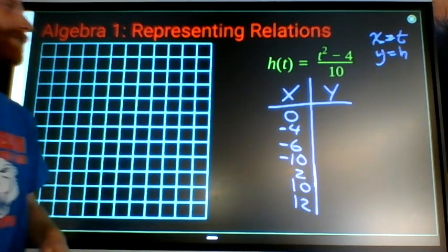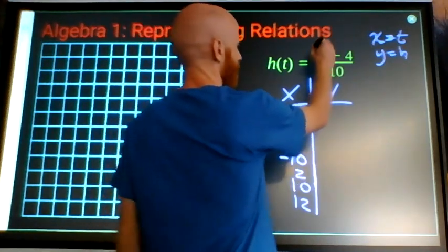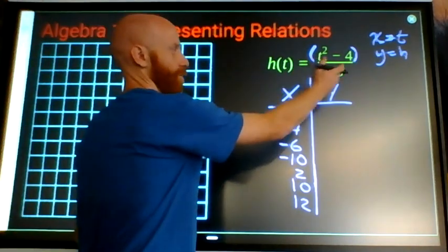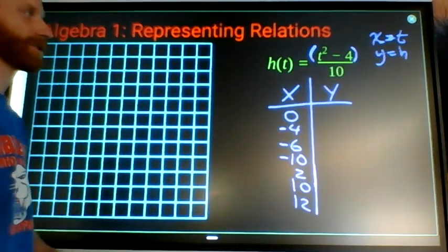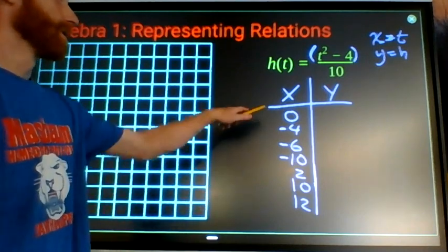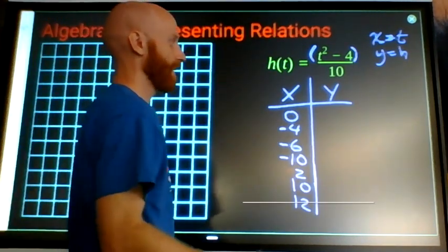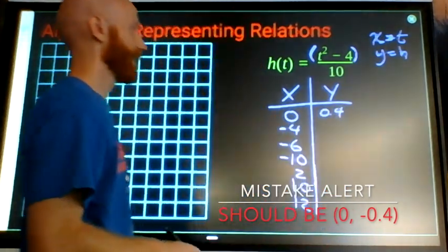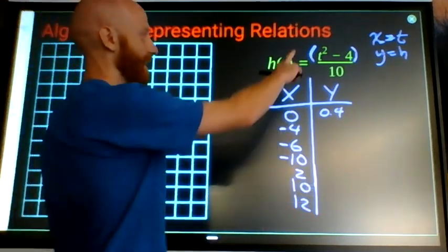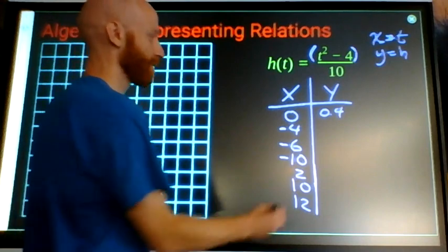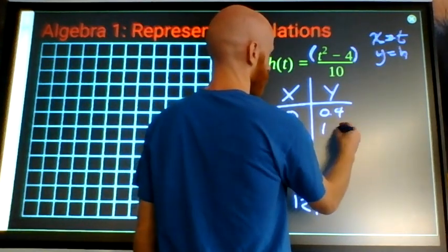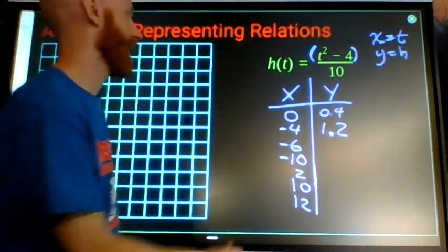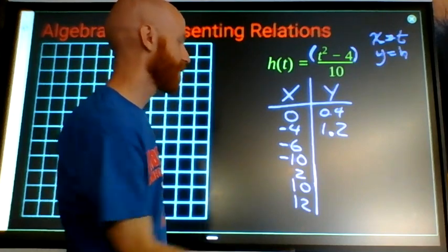So zero, we'll say negative 4, 6, 10, 2, 10, and 12. Those are my seven values. Remember if you're using a calculator with fractions, there's an understood parentheses around the numerator, and if there was more than one thing in the denominator there would be an understood parentheses around that. Zero minus 4 is 4 divided by 10 is 4 tenths, 0.4. When t is negative 4, we've got 16 minus 4 is 12 over 10 is 1.2.